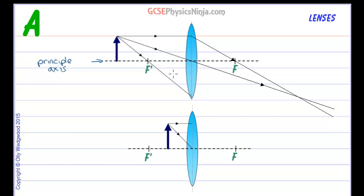It's a kind of reverse ray of the first ray which came in parallel and was refracted through the principal focus. This one goes through the principal focus and is coming out parallel. So let's draw that one in.